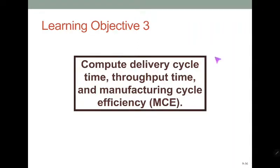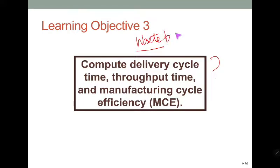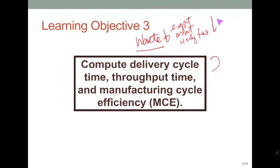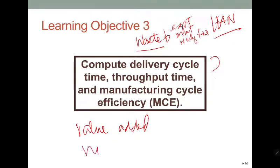Let's continue. Why do we have to look at delivery cycle time, throughput time, and manufacturing cycle efficiency? This is to lessen waste — waste in terms of the utilization of our assets such as equipment, materials, and parts. The use of equipment, materials, and working time is examined because you would like to have lean production.